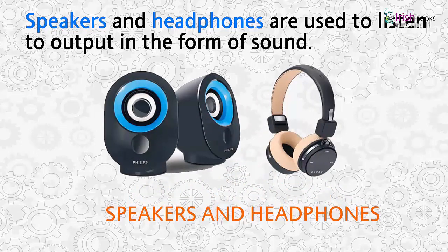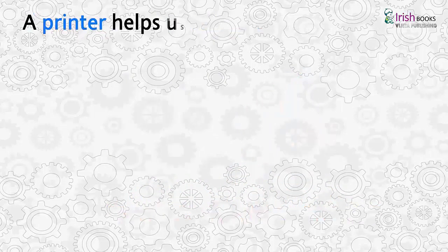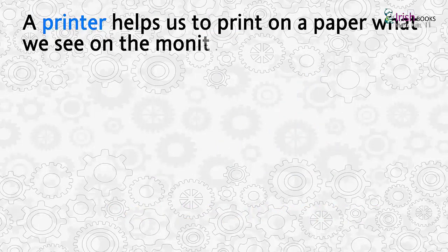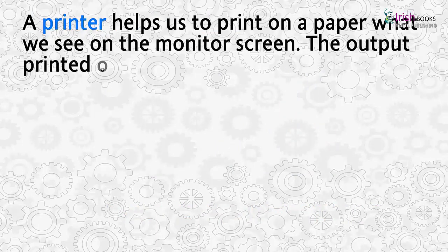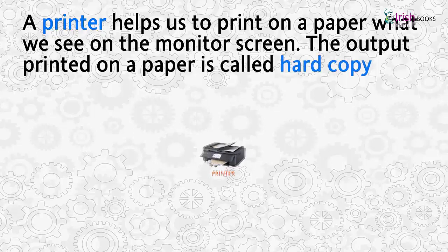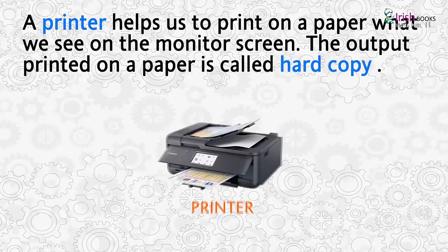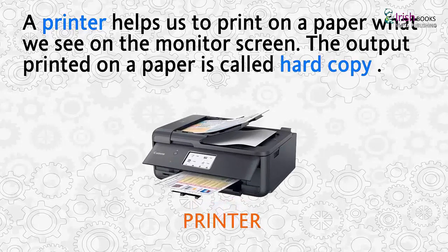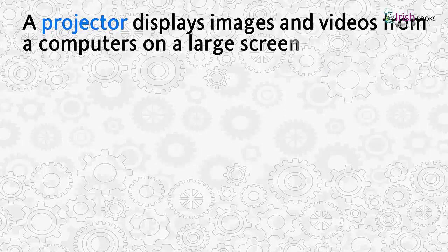A printer helps us to print on paper what we see on the monitor screen. The output printed on a paper is called soft copy. A projector displays images and videos from the computer on a large screen.